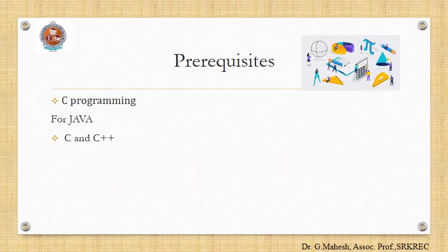The prerequisites of the course are: first, before learning C++, you should have some concepts of C programming — then only you can go to C++. For learning Java, it is preferable to have knowledge of both C++ and C.